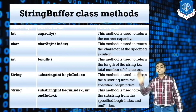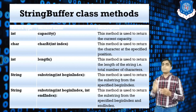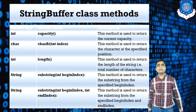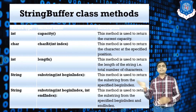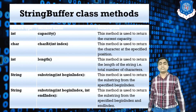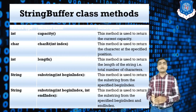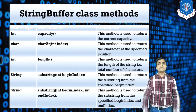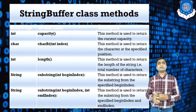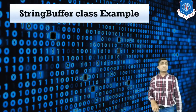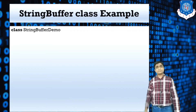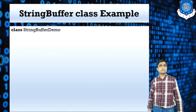The remaining methods: capacity — the buffer has a default capacity of 16; charAt — same as in String, returns the character at a specific index; length — returns the number of characters; and substring — used to find or check whether a particular string is a part of the string. These are the different methods of the StringBuffer class. Now let's look at the StringBuffer example program.